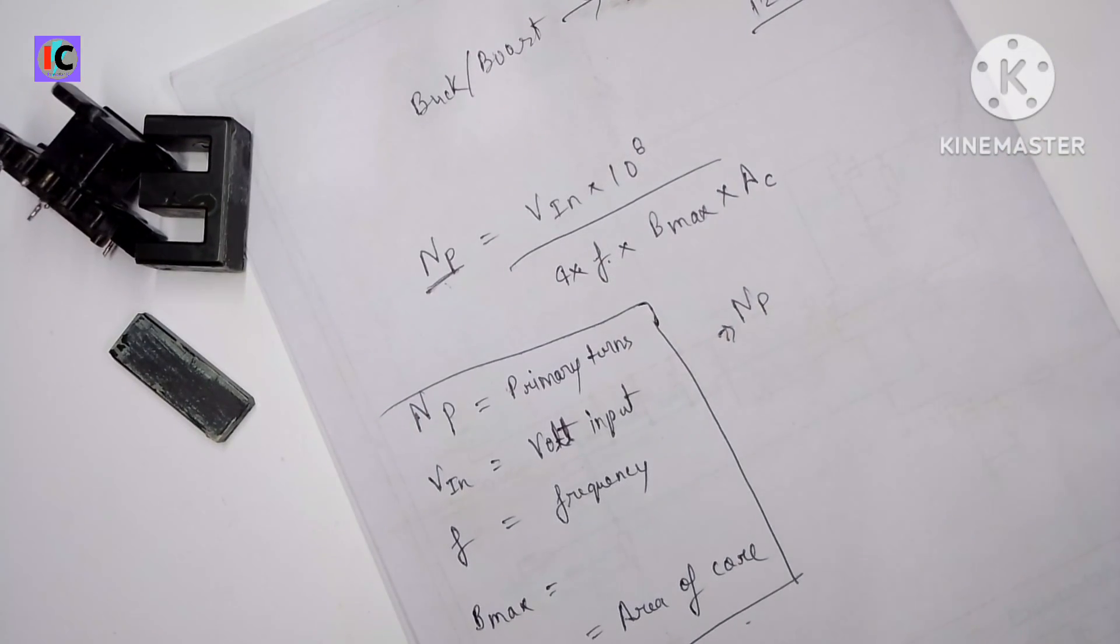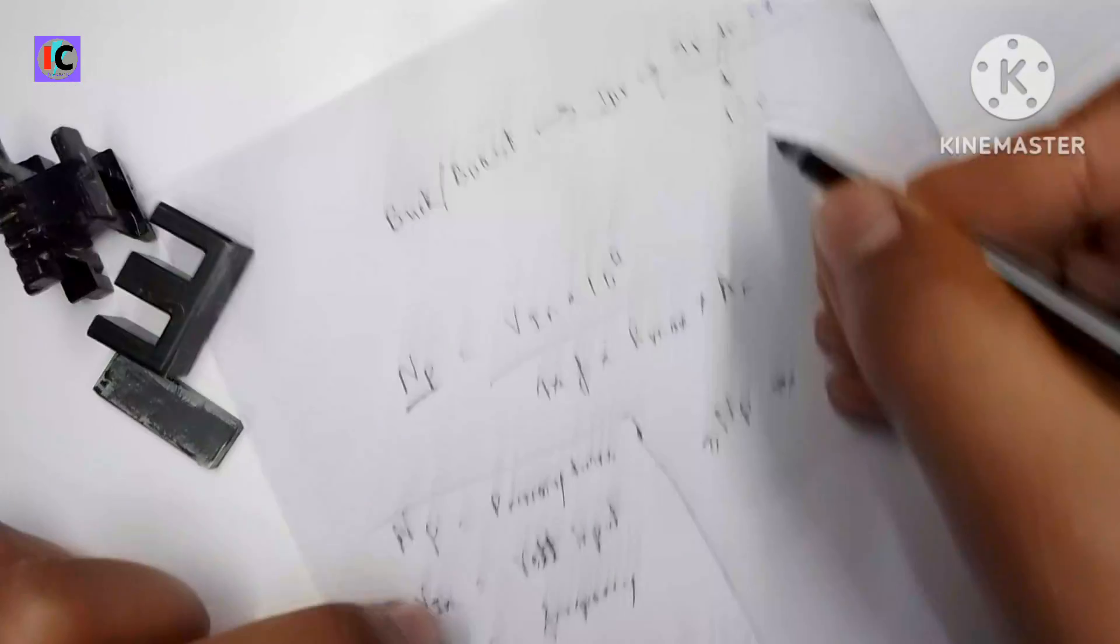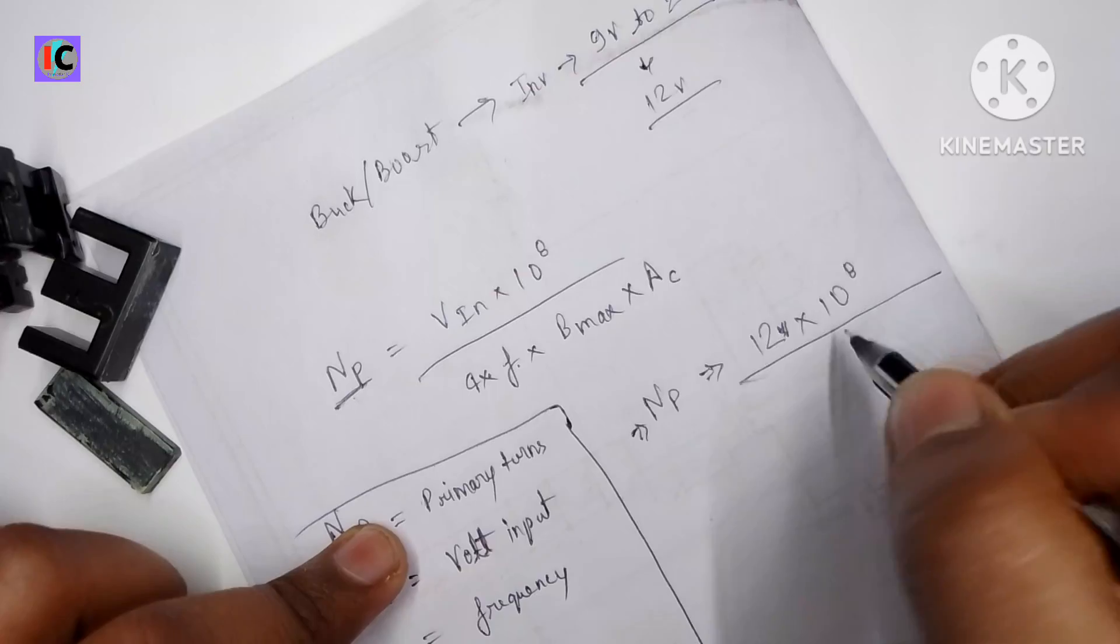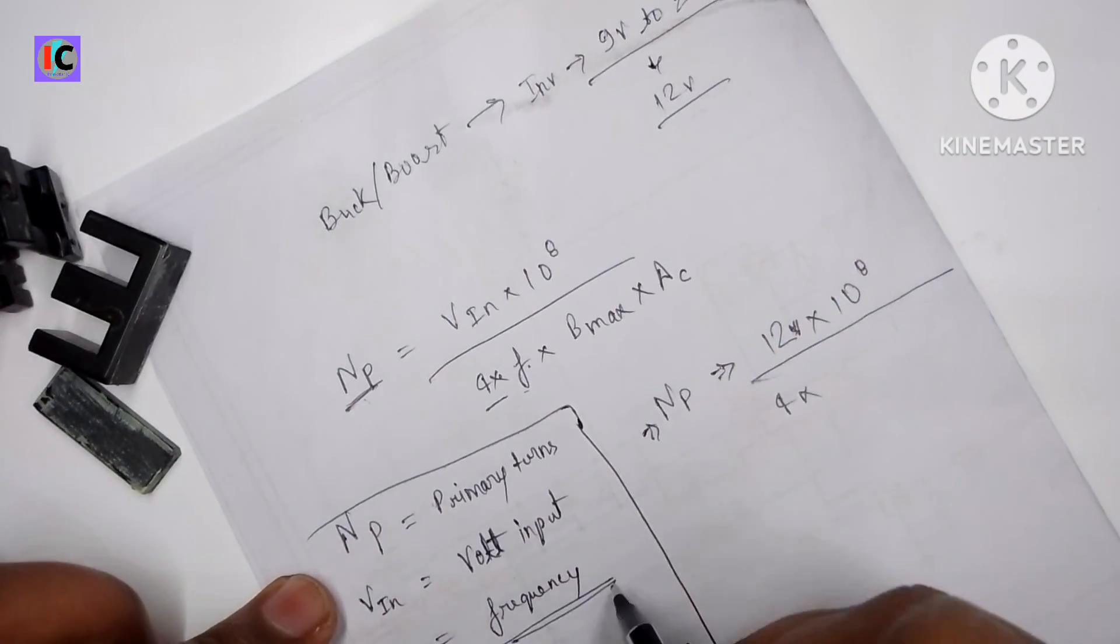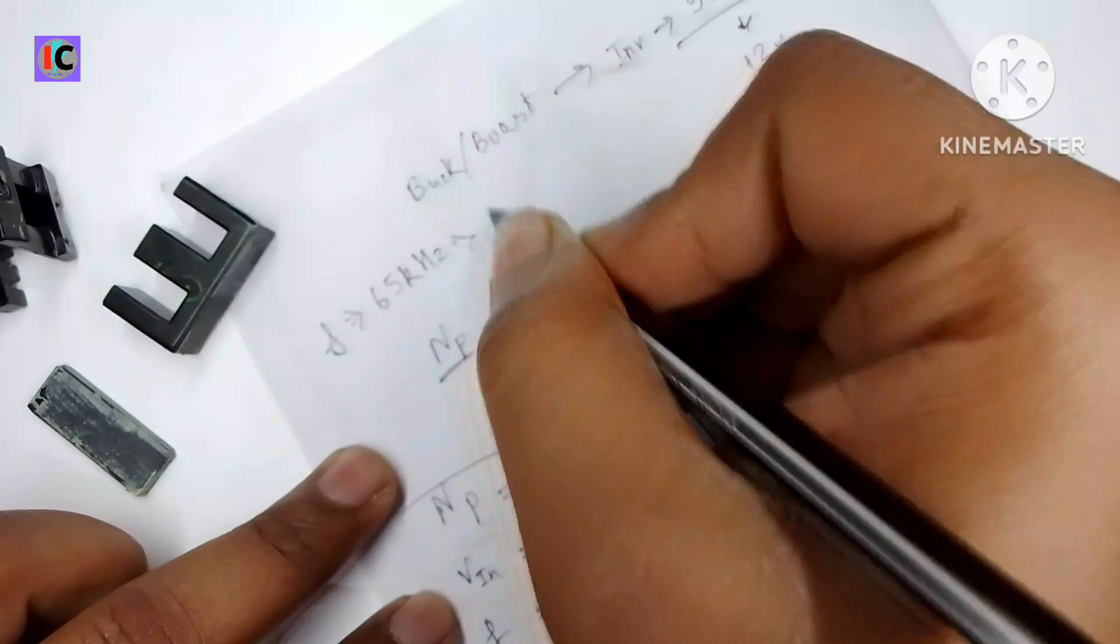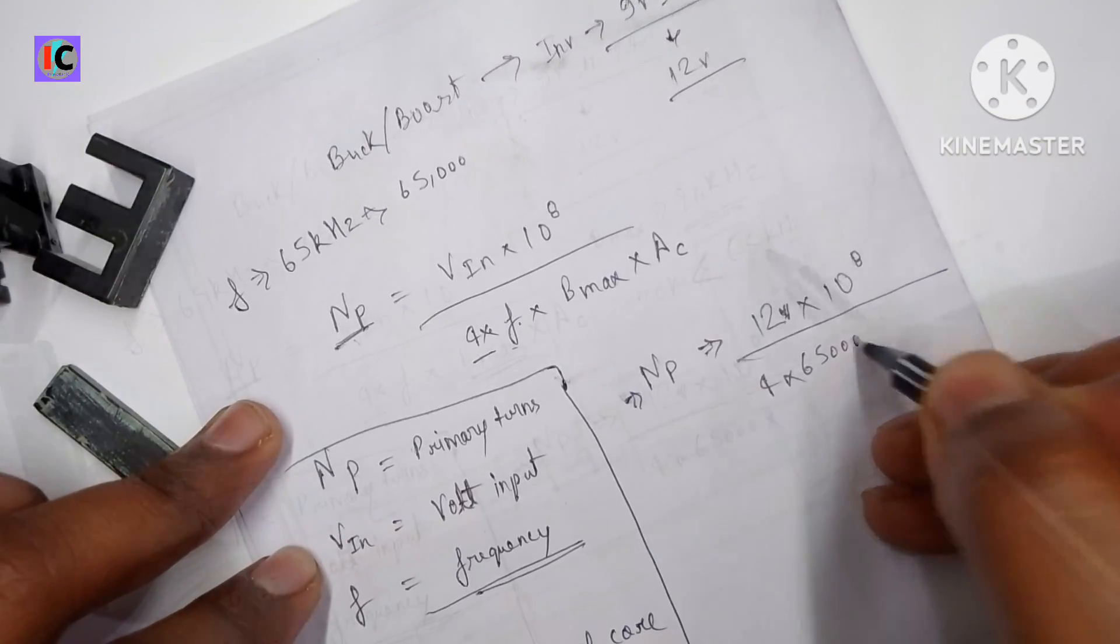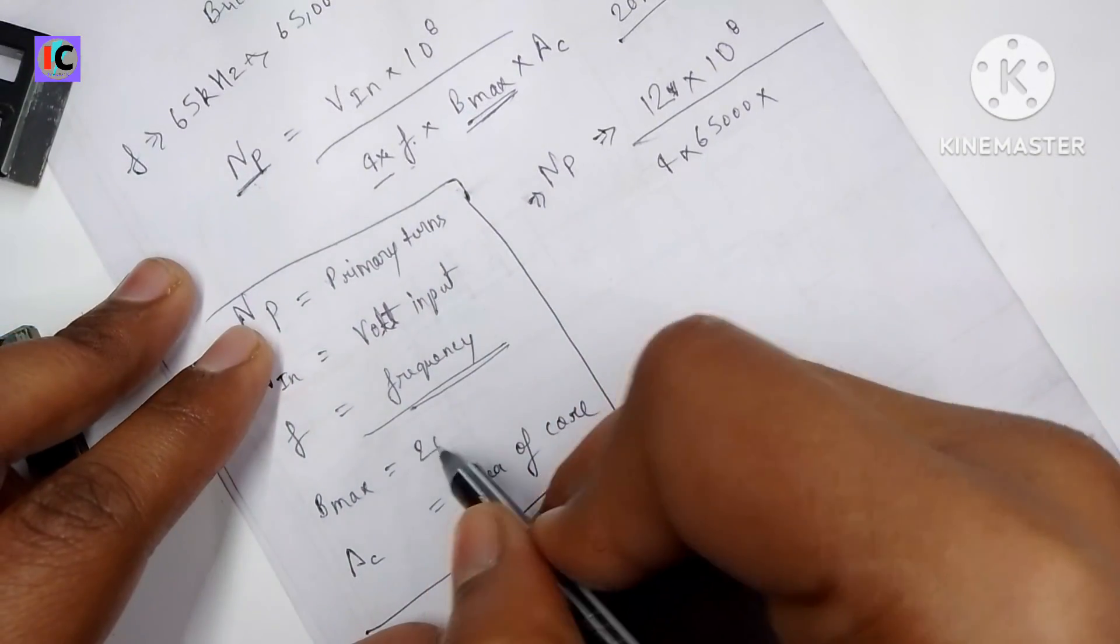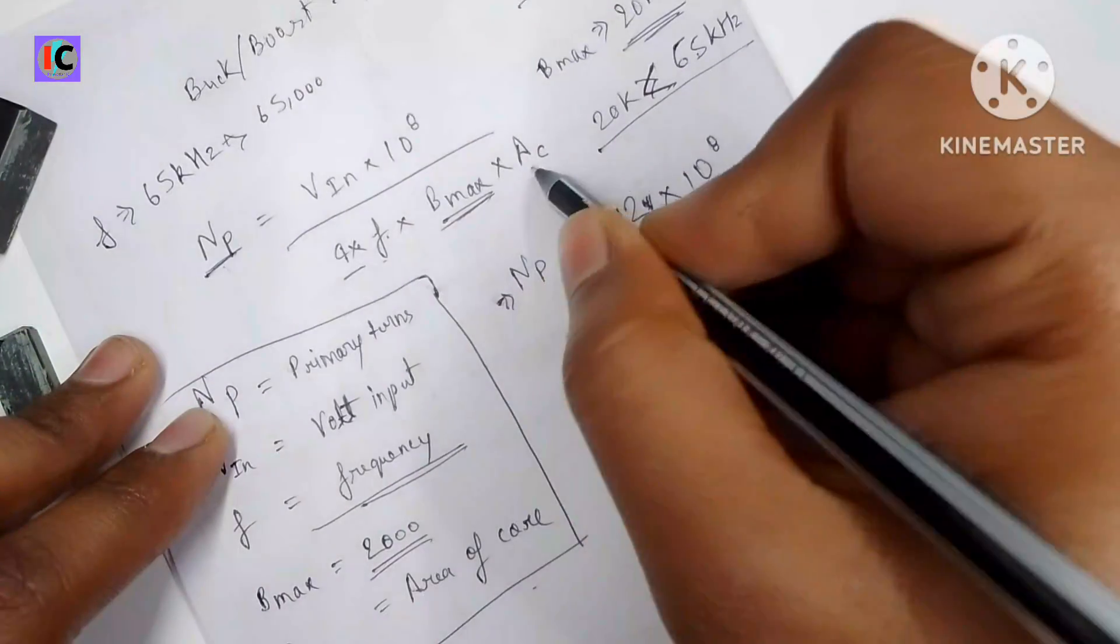So here I'm putting 12 volts in the place of VIN, and we are working on the frequency of 65 kHz. So I'm putting 65 kHz in the formula. Here the value for Pmax will be 2000 because we are working above 20 kW.